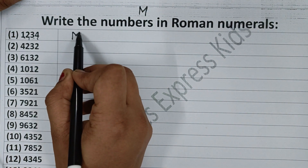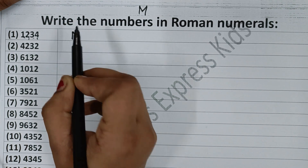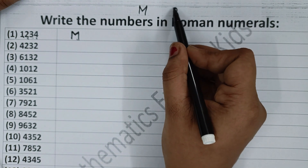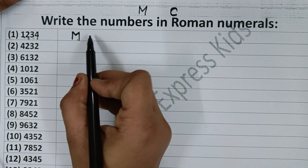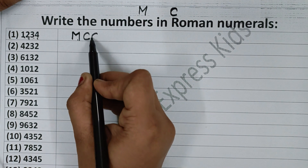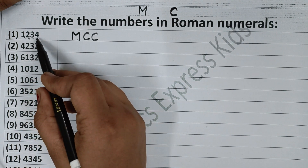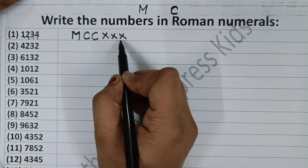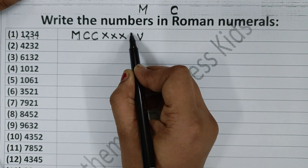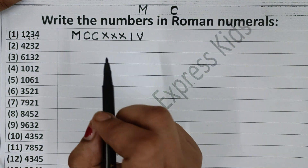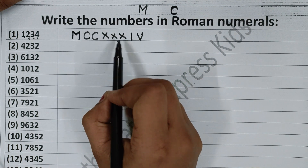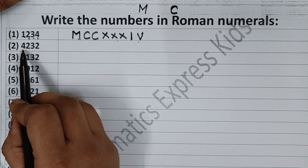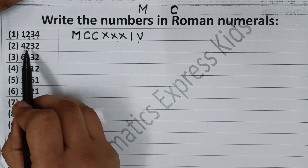M stands for 1000. Now 1200 — C stands for 100, and 200 is double C, so CC for 200. Now 34: you know how to write 30, that is XXX. Then 4: write 5 and subtract 1 from it — that gives IV for 4. So 1234 is MCCXXXIV. Clear?